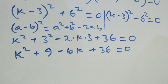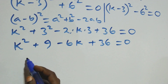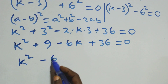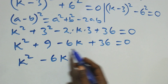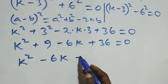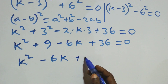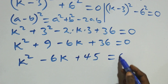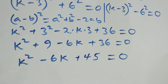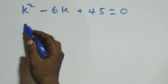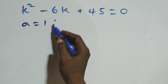Rearranging, we have k^2 minus 6k plus 9 plus 36, which gives us k^2 minus 6k plus 45 equals 0. This is a quadratic equation with a equals 1, b equals minus 6, and c equals 45.